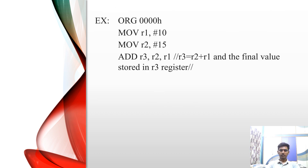Moving on to the example of assembly language. Here we can observe that 10 is moved into register R1 and 15 is moved into register R2. The ADD instruction performs addition, similarly SUB performs subtraction and MUL performs multiplication. We can see that R2 and R1 are added and the resultant is stored in register R3. So the final value is stored in register R3.